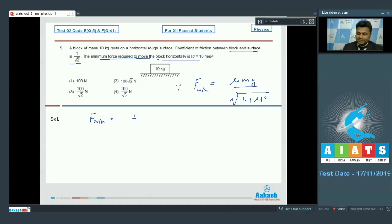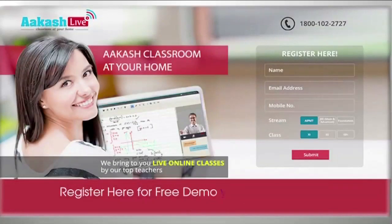F minimum is equal to mu, that is 1 upon under root 2, m that is 10, gravity also 10, divided by under root 1 plus 1 upon under root 2 whole square. After solving we will get this value, f minimum, that is minimum force required to move the block on this rough surface will be 100 divided by under root 3 newton. It means we will go with option number 4 only. Moving on to the next, that is question number 6.